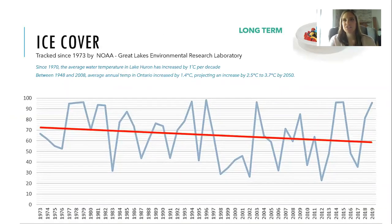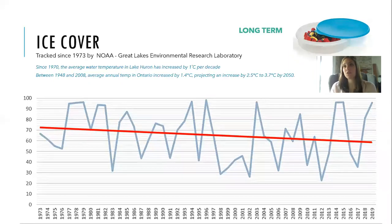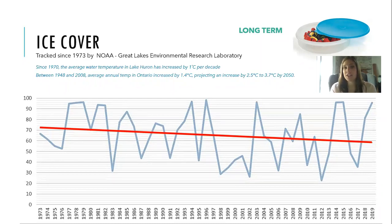Another thing we can talk about in relation to lake levels is ice cover. Ice cover has only been tracked on the Great Lakes since 1973 by NOAA — the National Oceanic Atmospheric Association Great Lakes Environment Research Laboratory. What they've noticed over this long-term data set is that the average water temperature in Lake Huron throughout the year has increased by approximately one degree per decade. Between 1948 and 2008, the annual atmospheric temperature in Ontario increased by 1.4 degrees Celsius, with projections of another 2.5 to 3.5 degree increase by 2050.